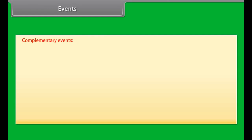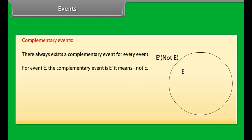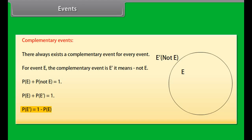Complementary events: there always exists a complementary event for every event. For event E, the complementary event is E dash — it means 'not E'. Probability of event E plus probability of event not E equals 1. Therefore, probability of not E equals 1 minus probability of event E.